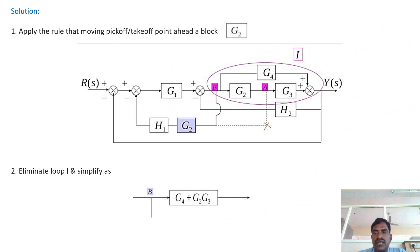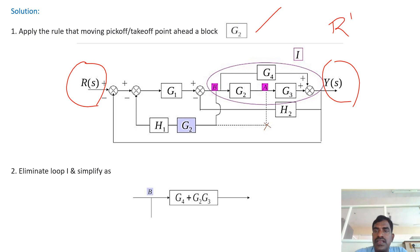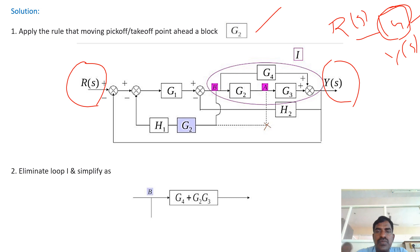Now we consider one problem. Apply the rule of moving a pick-up or take-off point ahead of a block — that means G2. Here R(s) is the input and Y(s) is the output. We need to find the transfer function, which means we require only a single block. Since there are many blocks, we have to reduce them to a single block.